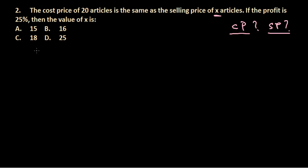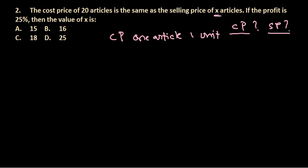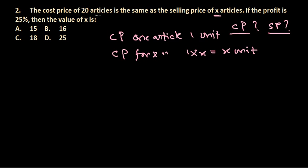So let's assume the cost price of one article is 1 unit — any unit, like rupees or dollars, whatever. So the cost price of X articles will be 1 × X = X units. The cost price of X articles is X units.